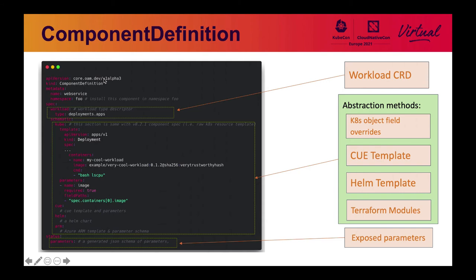Let's take a deeper look into the component definition object. It encapsulates a workload type that takes the major role to run the service. It provides a couple of templating methods for platform teams to choose — you can use Helm, CUE, or Terraform HCL languages. It also writes back useful information in status; for example, there's a schema of the exposed parameters, and you can write health check results back to the status as well.